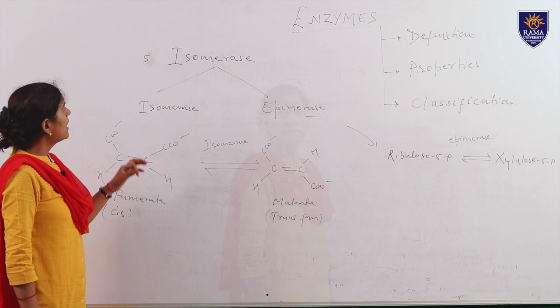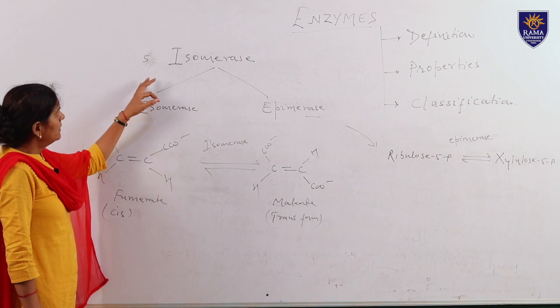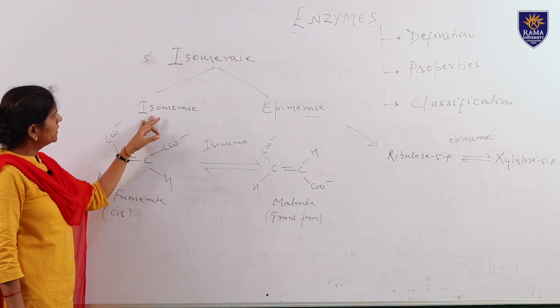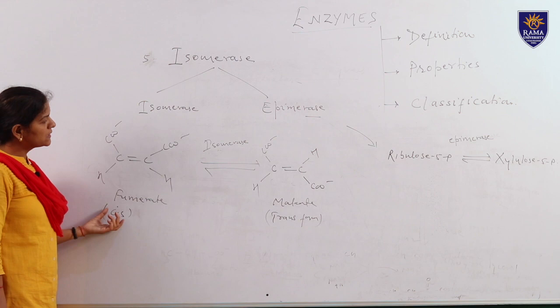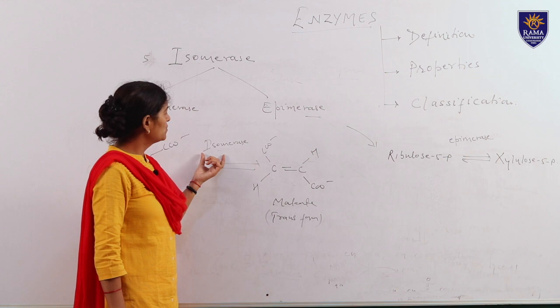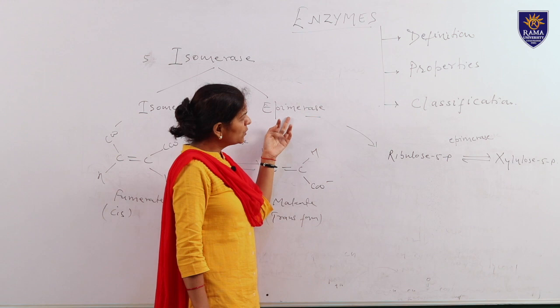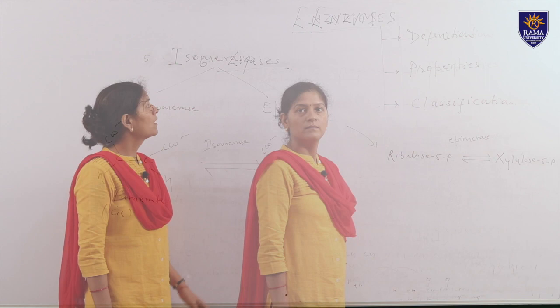Isomerases are the enzymes which help in rearrangement of atoms to form a particular isomer. This group of enzymes has two main subclasses: isomerases, which perform isomerization reactions, and epimerases, which perform epimerization reactions. In isomerization, the cis form is converted into the trans form — for example, fumarate in cis form is converted into malate in trans form through isomerase enzyme. In epimerization, an example is conversion of ribulose-5-phosphate to xylulose-5-phosphate.